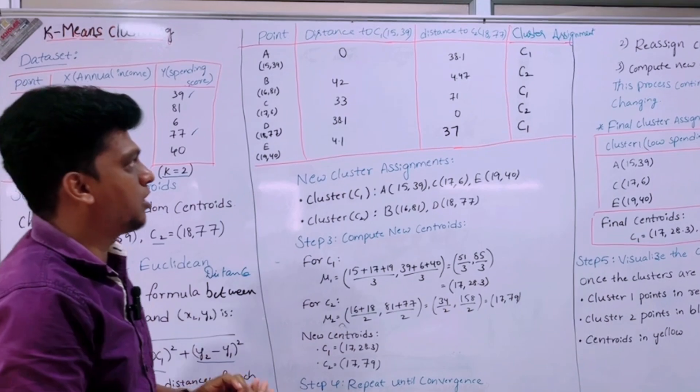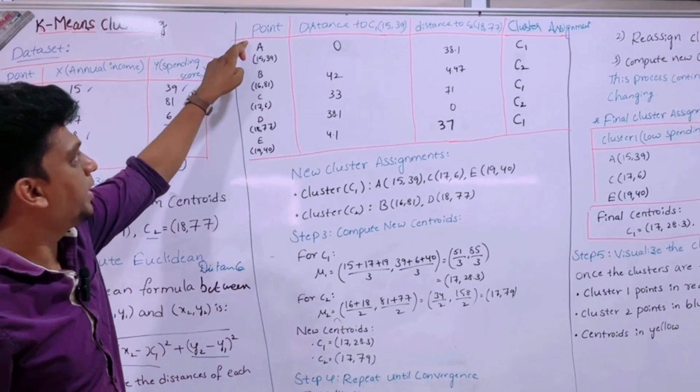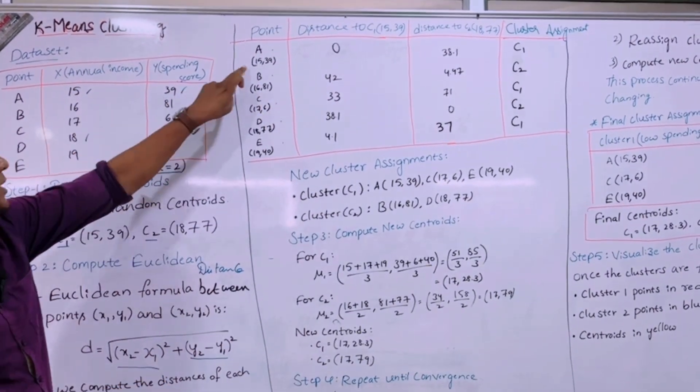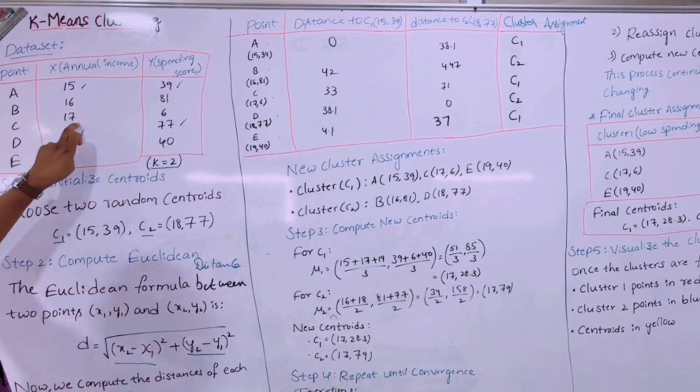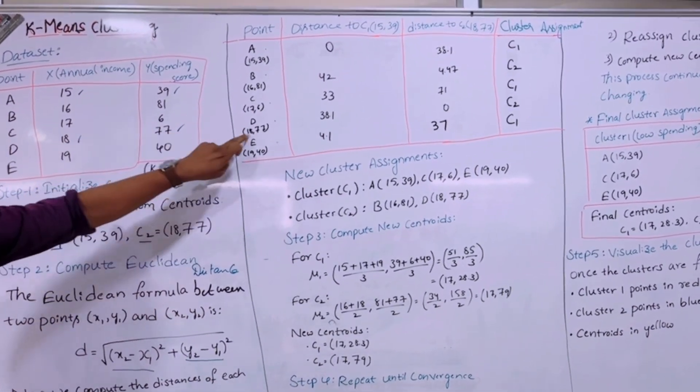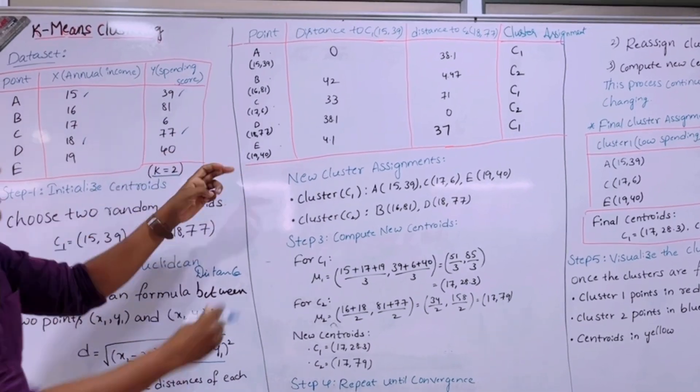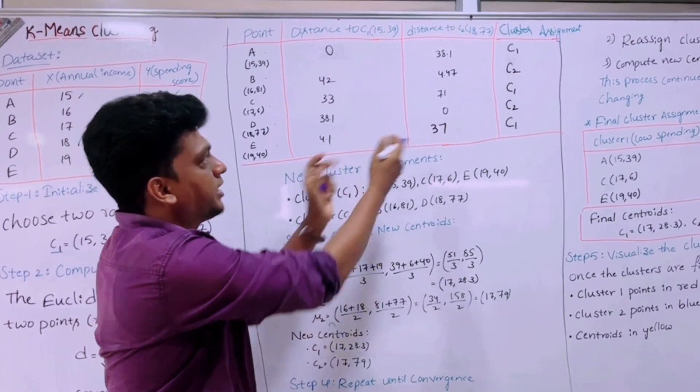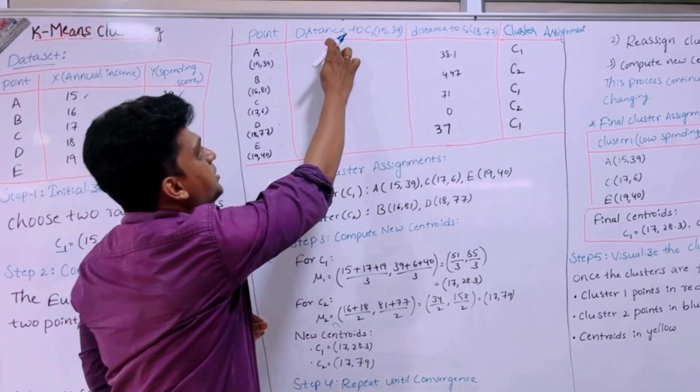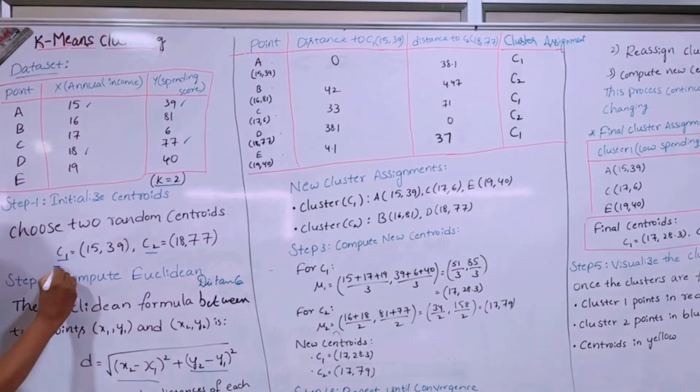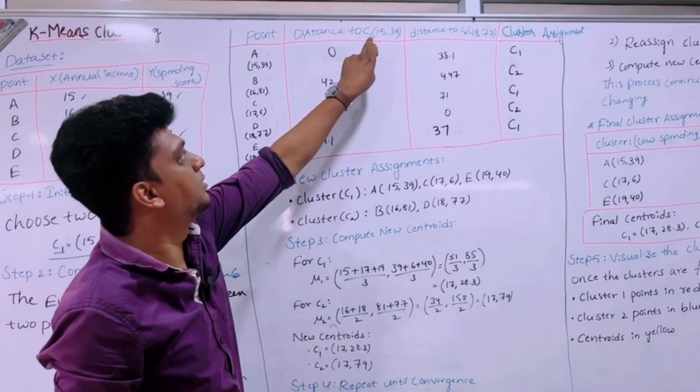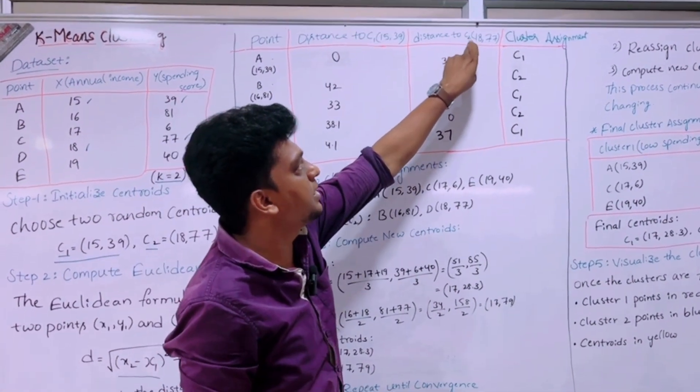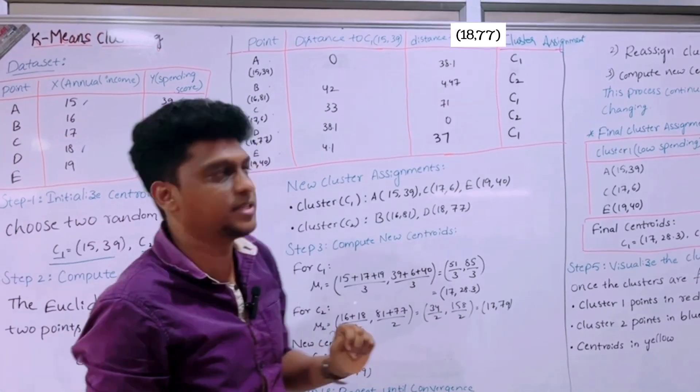So now we have to draw a table. In the table the point has been mentioned first: A, B, C, D, and E. So A is 15,39, B is 16,81, C is 17,6, D is 18,77, and E is 19,40. First we should split the points in this column. In the next two columns we should find out the distance to this cluster C1, distance to C1. The C1 is nothing but 15,39 that we have taken randomly here, and distance to the cluster or that centroid C2, 18,77.